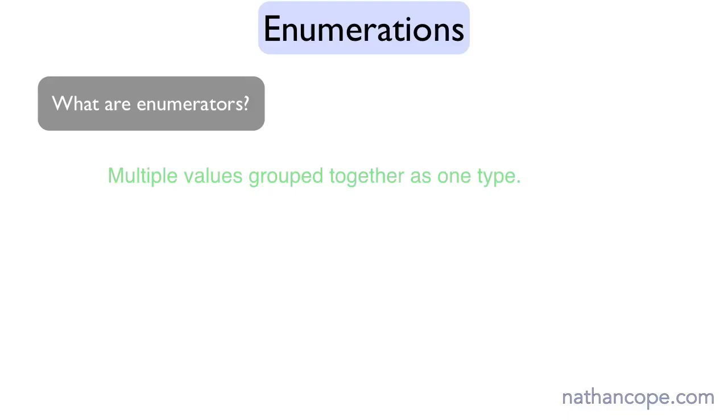Enumerations, or more commonly called enumerators, exist in just about all object-oriented programming languages. They define a group of related values as a type and let you work with those values in your code.